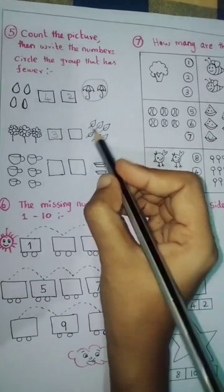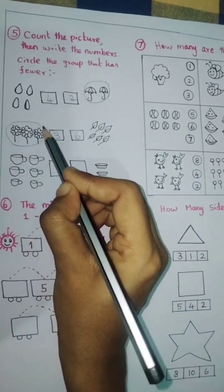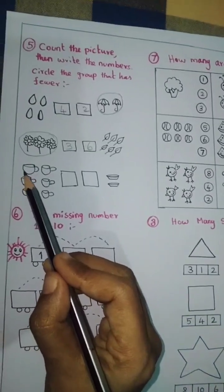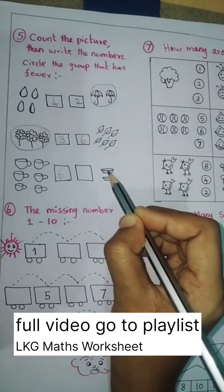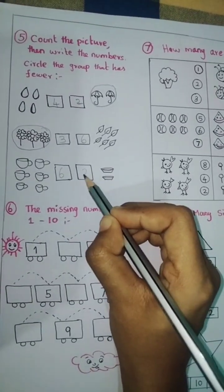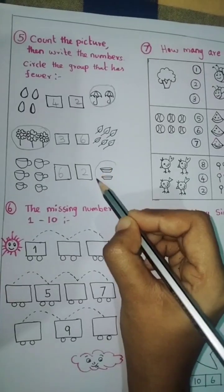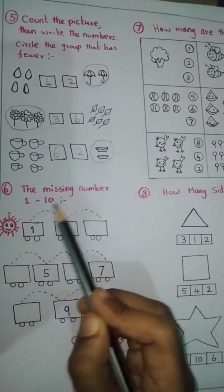Next, flower count 1, 2, 3. 3 flowers. Next, 1, 2, 3, 4, 5, 6 leaves. Circle fewer groups, flower. Few groups. Next, 1, 2, 3, 4, 5, 6 cups. Write number 6. 1 and 2, write number 2. Few groups, circle the 2.